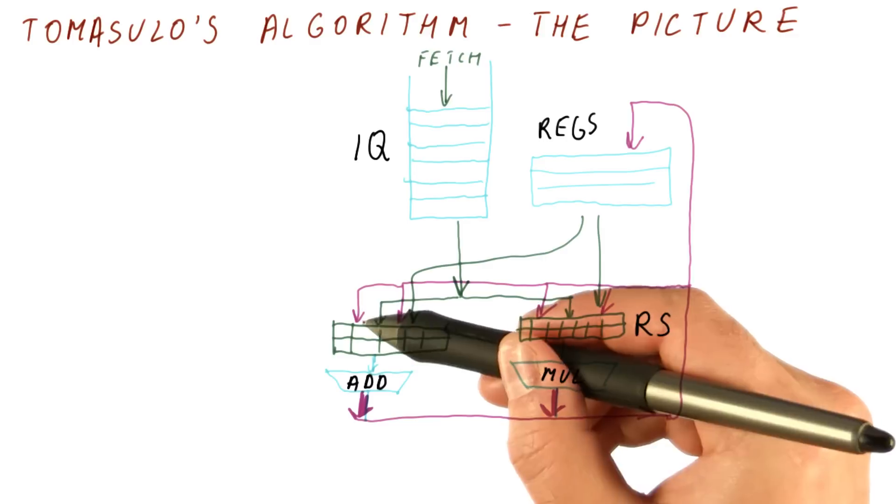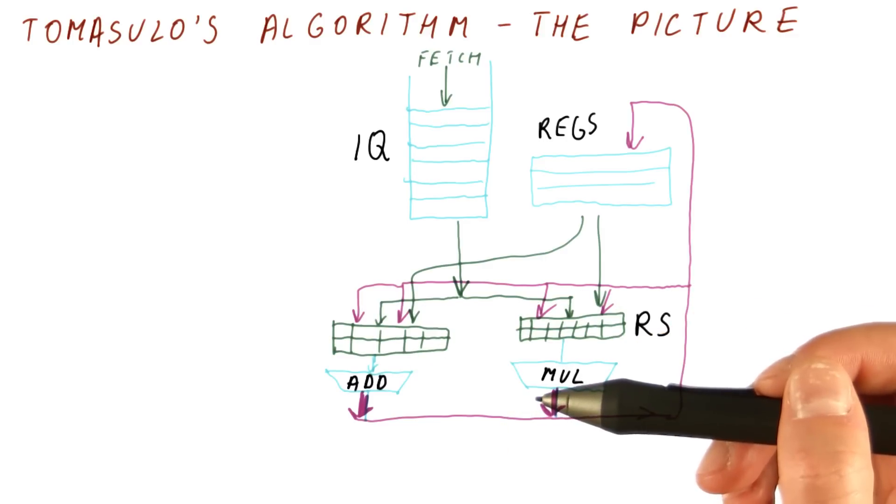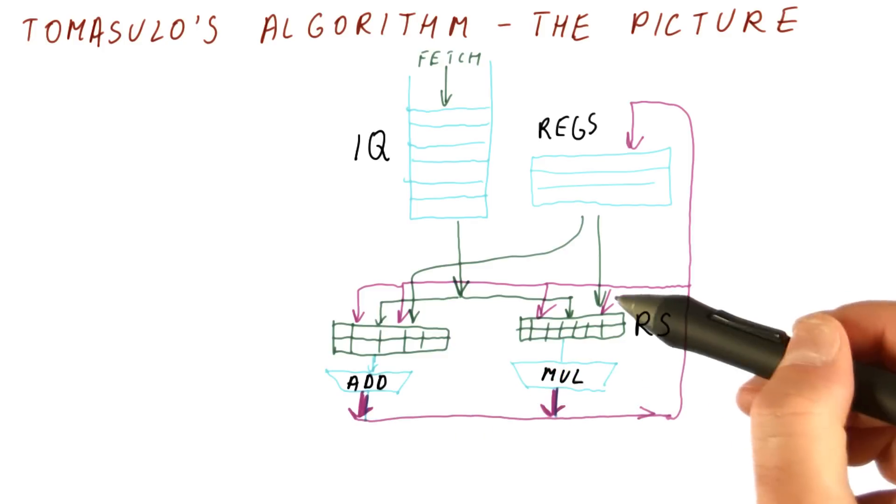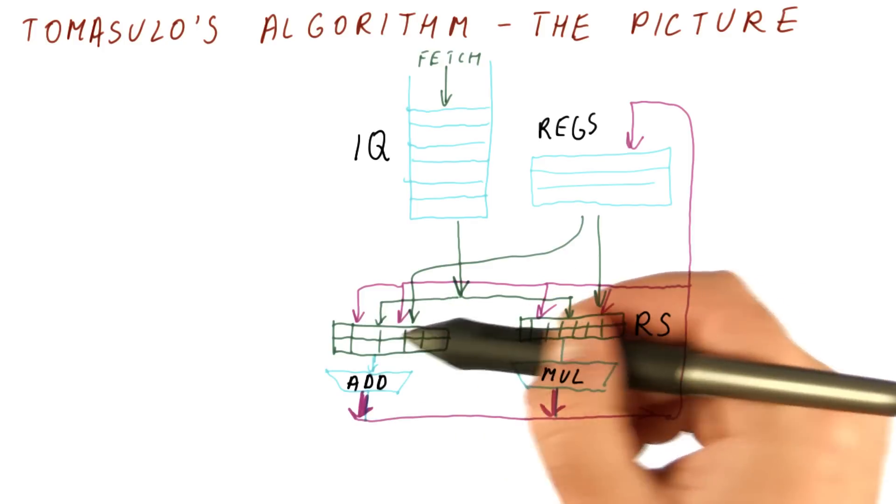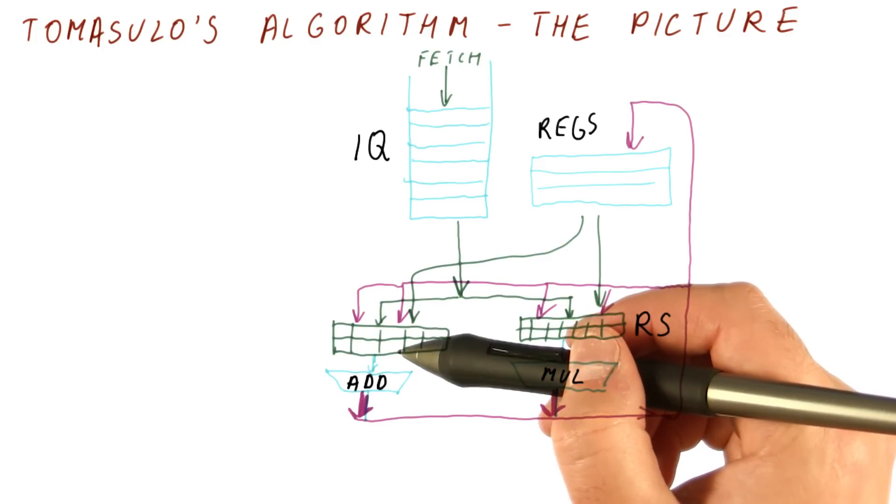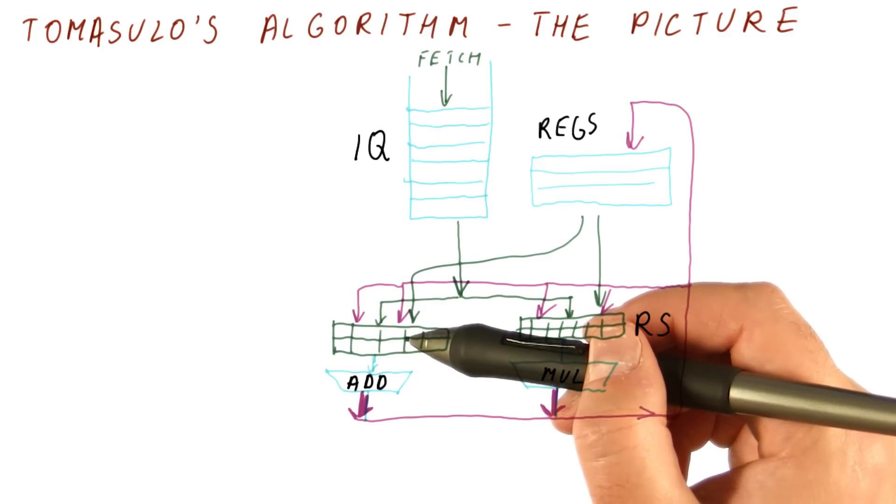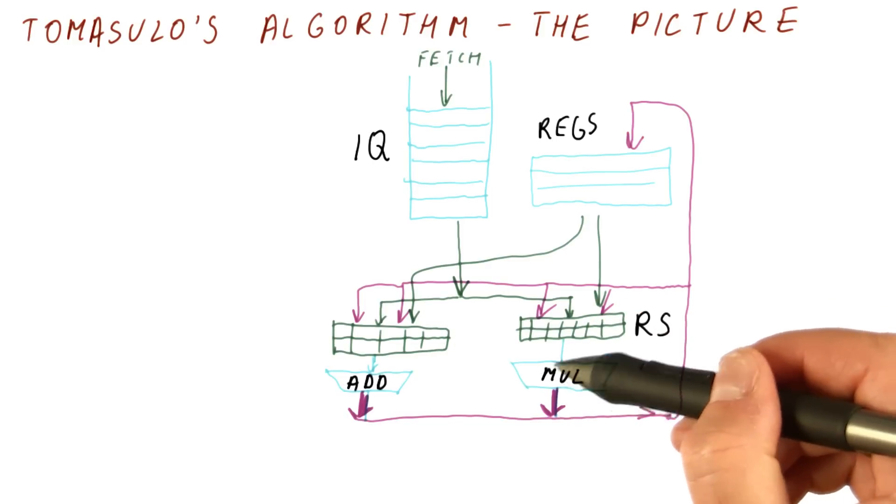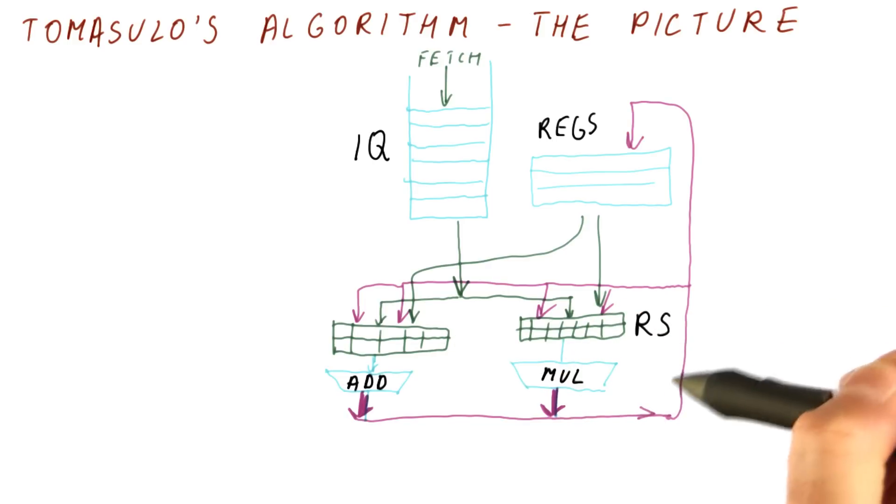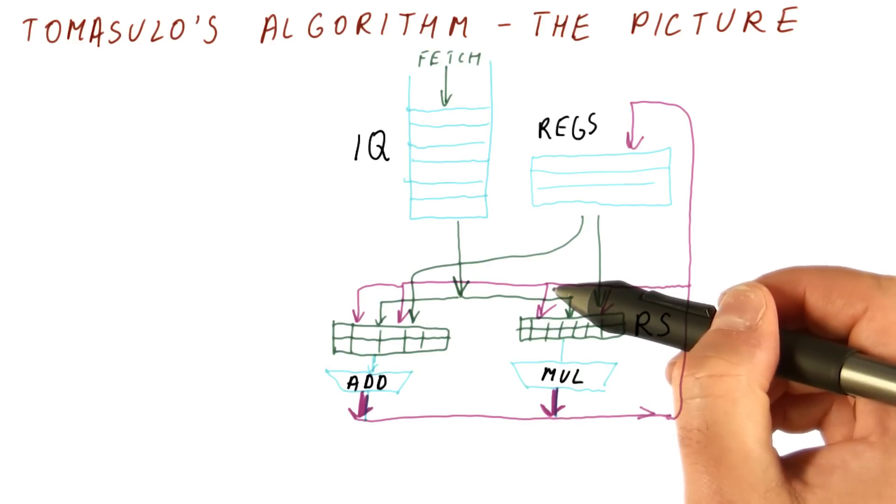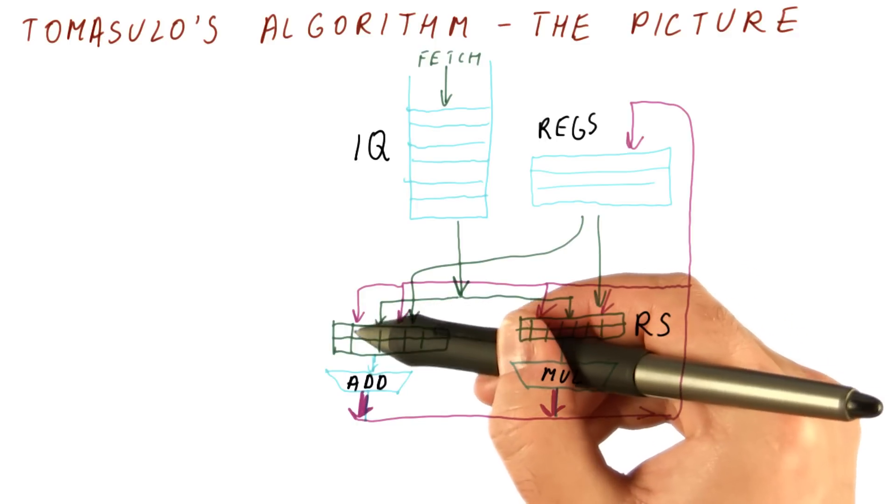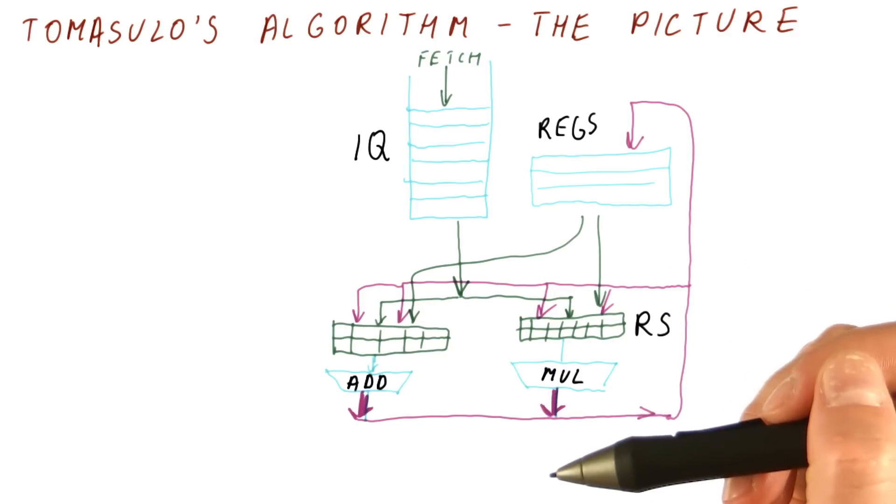Now, I have two of these per reservation station because a typical instruction will have two inputs. For example, you're adding two numbers, and when you broadcast the result, either of the two or both of them might need that result. So if you're doing something like add r1, r1, and the instruction that is producing r1 is currently in the multiplier, when it broadcasts the result and says this is r1, we want to latch it into maybe both of the operands for this instruction.